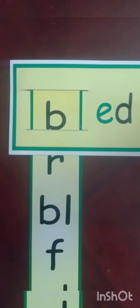Now we are going to learn about the 'ed' sound. The sound of E is 'a'. A. The sound of D is 'd'. D. Ed.